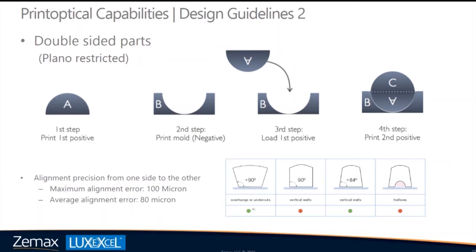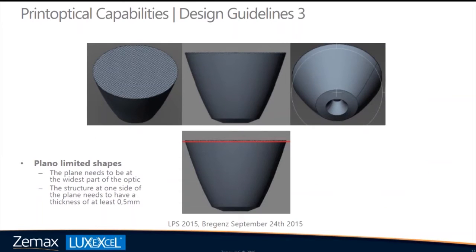We don't yet have a temporary support material, so we can't print any shape. What we can do is first print one shape — a single-sided print from a flat surface. To do a double-sided print, we first print a negative to the positive, place the positive in it, and then print onto the flat surface again. That way we can create shapes not possible with a single-sided product.